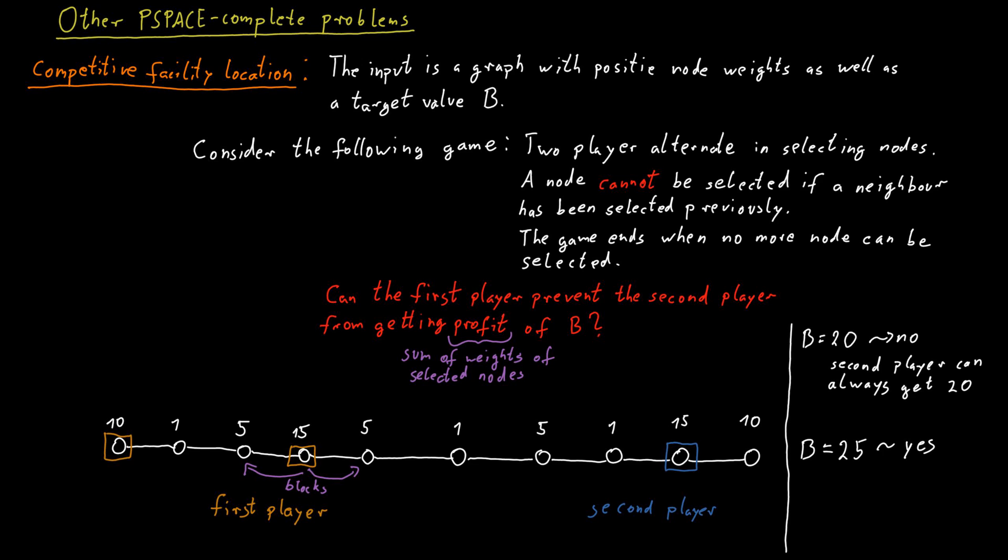This is just a very simple example. In general, we allow much more complex graphs than just a simple line. But this is the basic idea behind this decision problem competitive facility location.